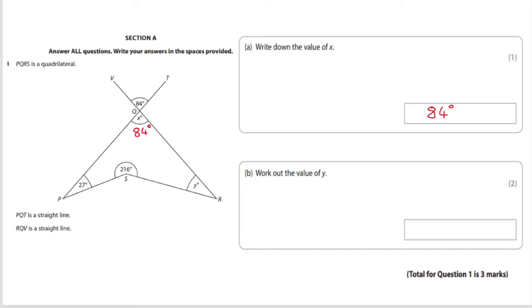Okay so now the next question asks you to do a little bit more that's why it's a two mark question. It says work out the value of y. Now as you can see the shape that it's asking you to work out the angle in is a quadrilateral.